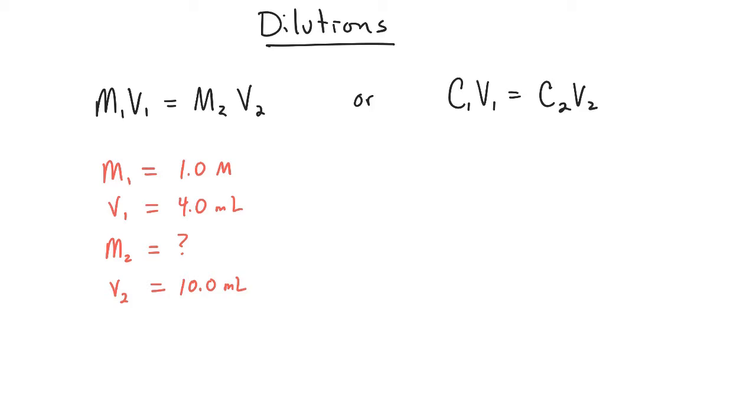So how do we go about solving for M2? The easiest way to do that is to write the equation, so M1V1 equals M2V2. And then, since we want to isolate M2, we're going to divide both sides by V2. And so what that's going to do is cause V2 to cancel out on the right side, and so we're going to have M1V1 over V2 equals M2. And from here, all we have to do is simply plug in the numbers.